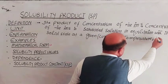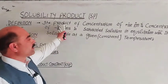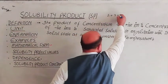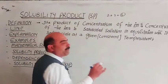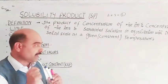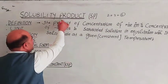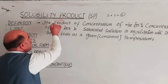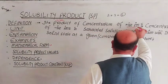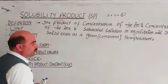This is the definition of solubility product. 'Product' here means hasele zarab — multiplication, like 2 multiplied by 3 equals 6. So the product of the concentration of positive ions present in solution and the concentration of negative ions present in solution — when we multiply these two concentrations together — gives us the solubility product.